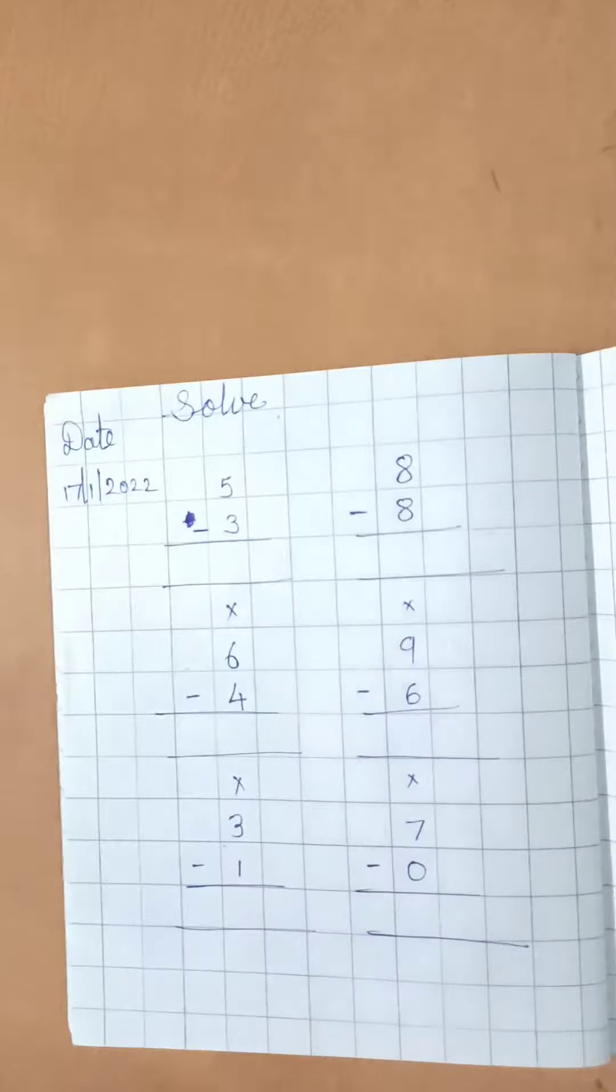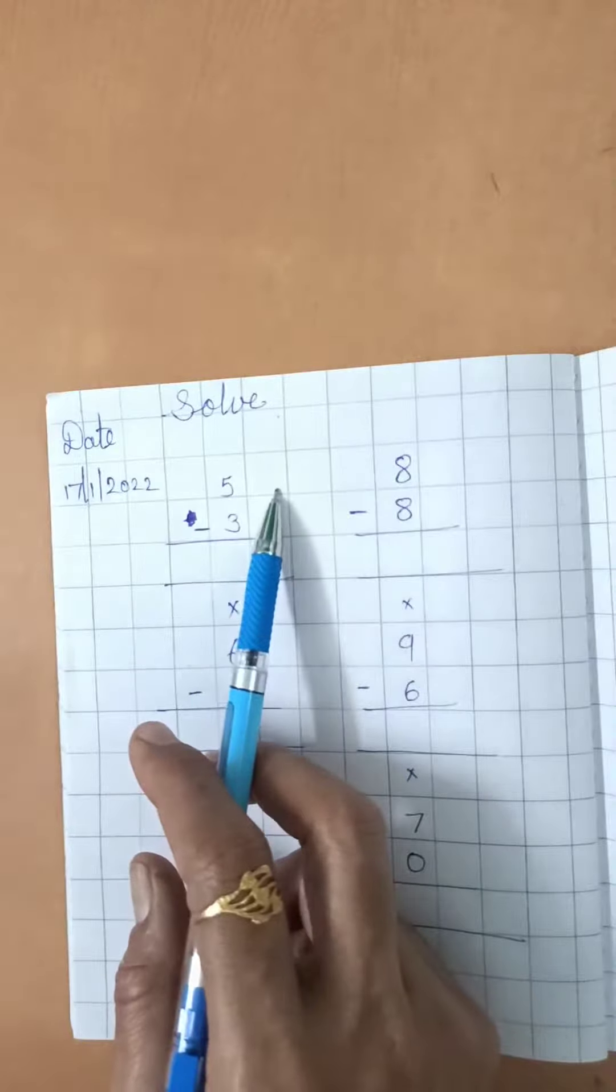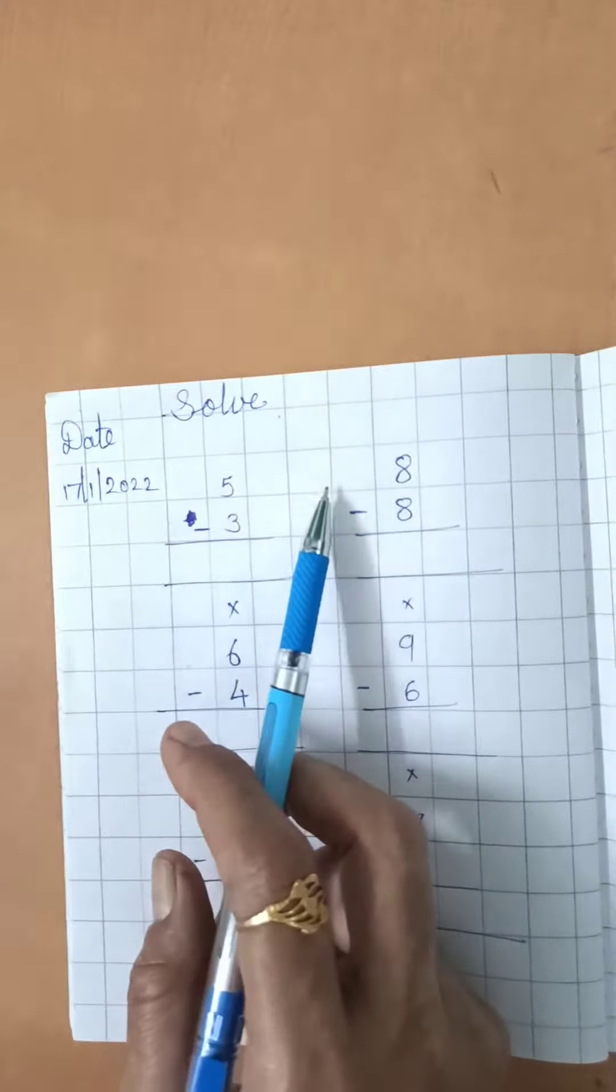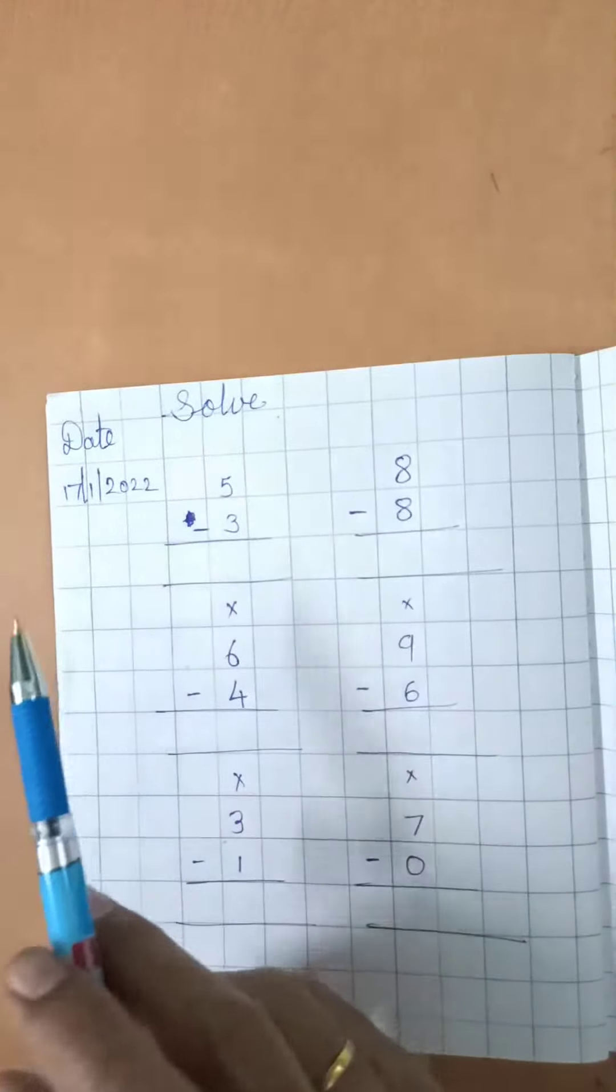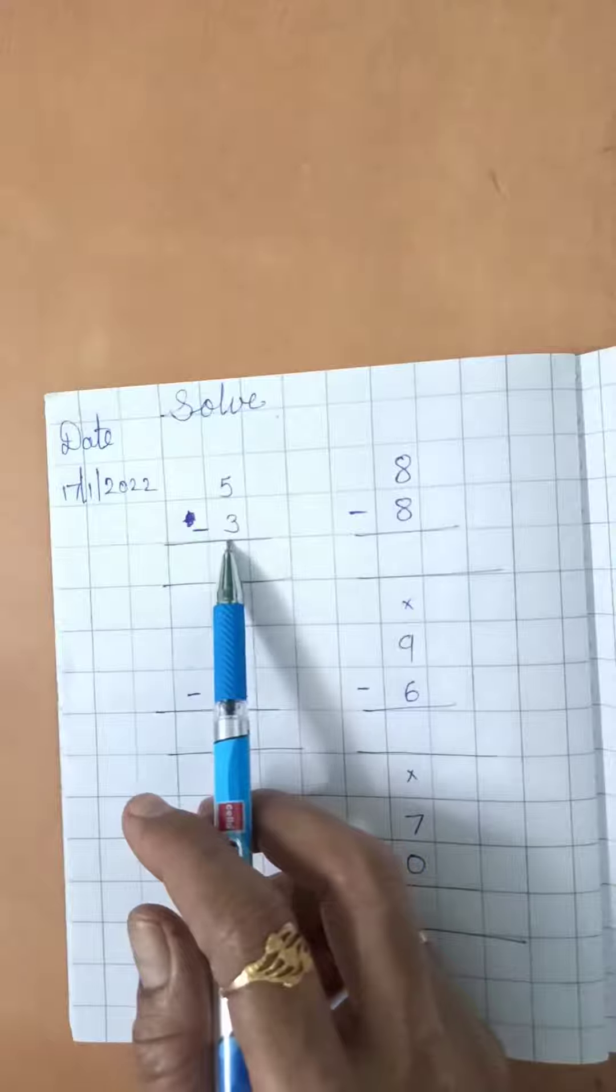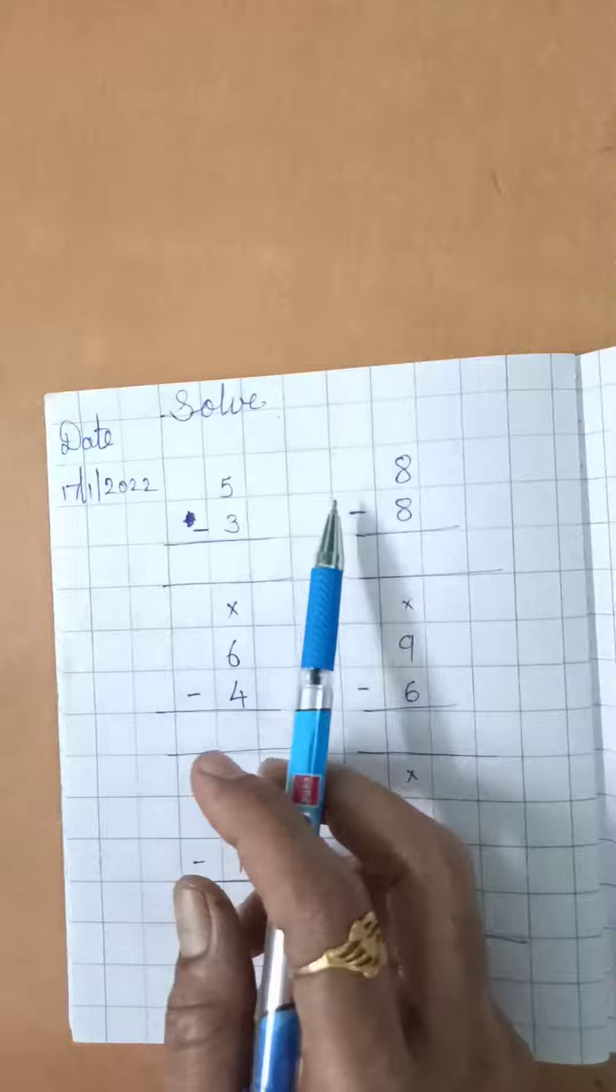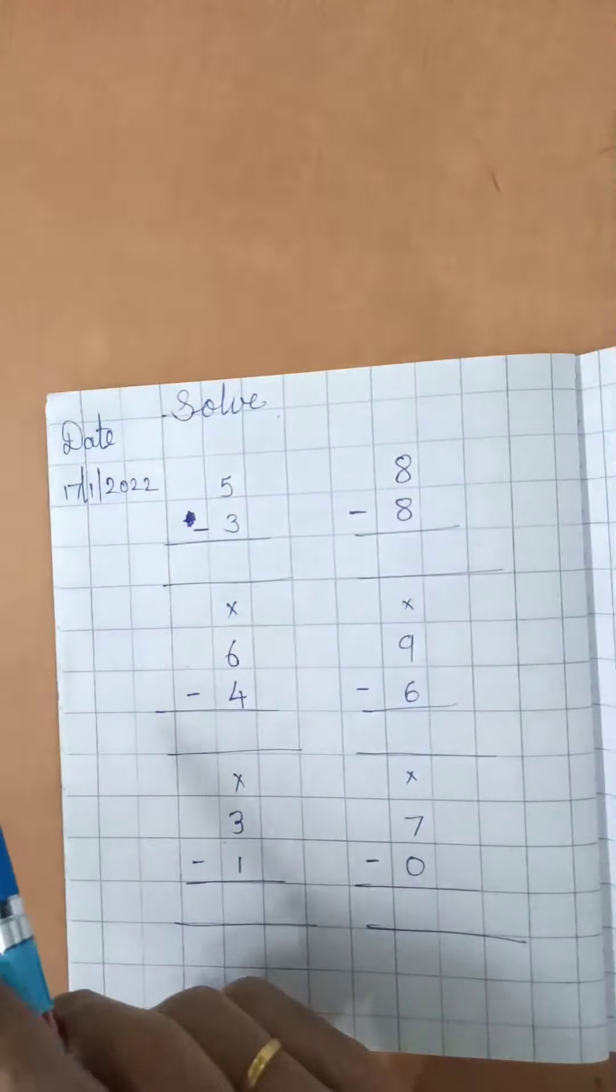While solving subtraction problem, you have to draw only first numbers picture. Jo upper wale number hai, unke hi picture apko draw karne hai. Then minus says cut the ball. How many ball cut karne hai? Jo down number, niche second number jo diya hai, wo apko dekhna hai. And according to that, apko pictures cut karne hai.